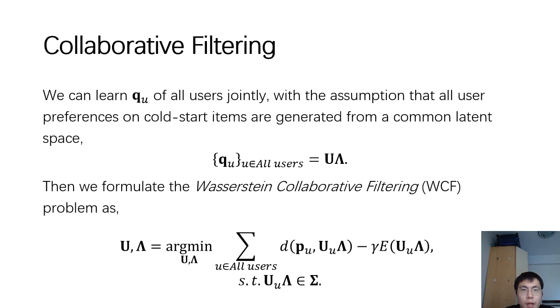Inspired by the success of collaborative filtering, we can learn the q_u of all users jointly with the assumption that all users' preference on cold start items are generated from a common latent space. So we factorize the user's preference on cold start items as a product of two low-dimensional matrices. This is very like the probabilistic matrix factorization work.